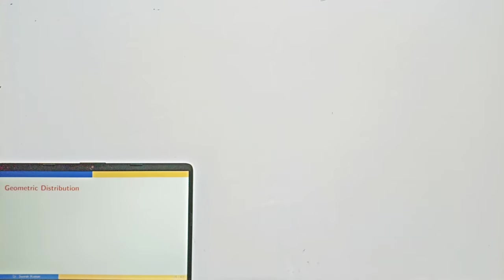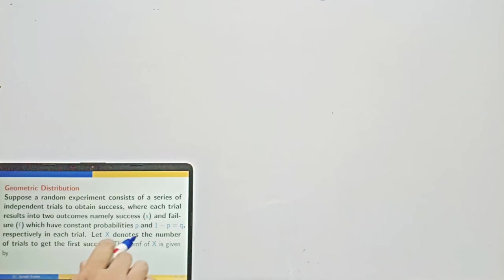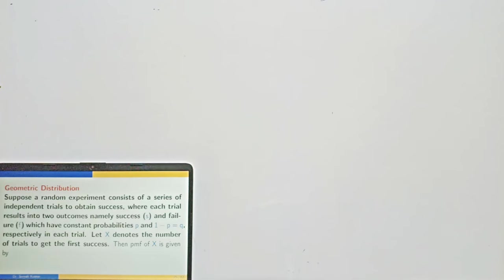The first distribution is geometric distribution. The important thing is the conditions under which such a distribution is applicable. Suppose a random experiment consists of a series of independent trials to obtain success, where each trial results into two outcomes namely success and failure, which have constant probabilities P and 1-P (also denoted by Q) respectively in each trial.